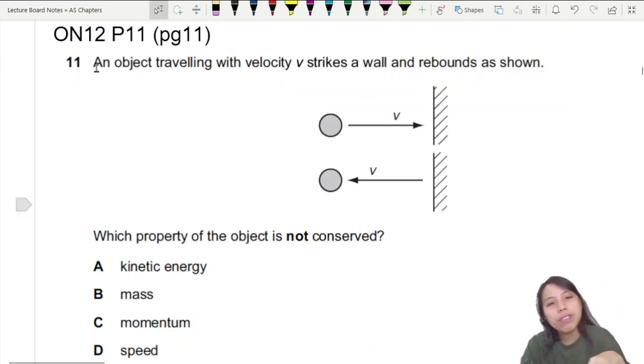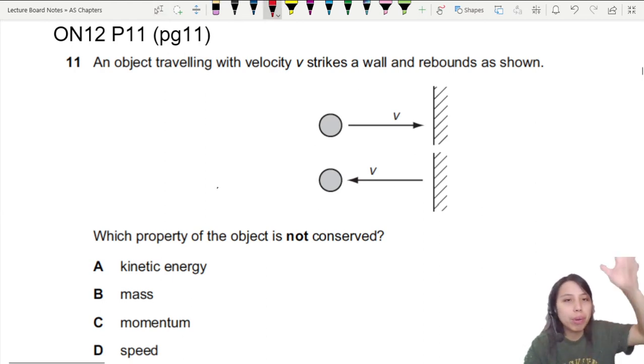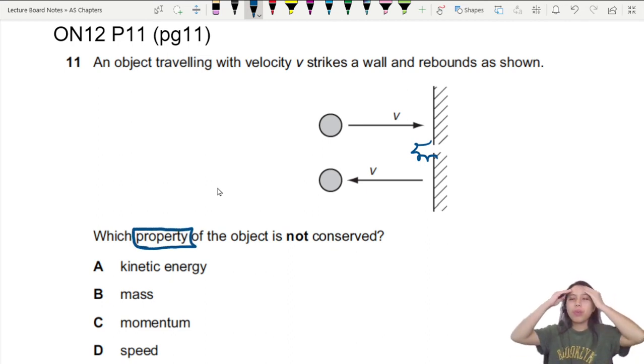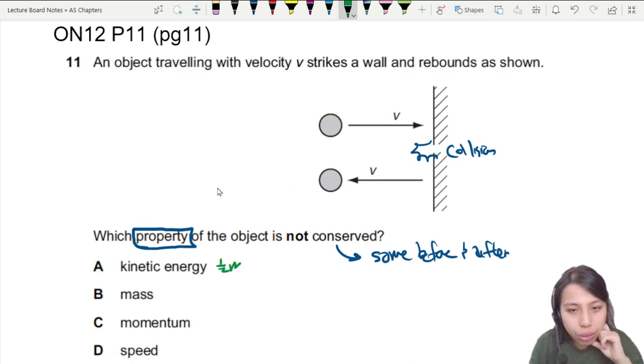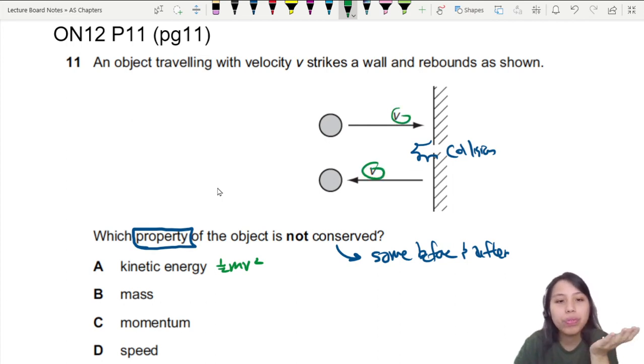How do we better understand this? Here we have an object travelling with a velocity v, hit the wall and bounce back. Which property of the object is not conserved? What does conserve mean? Conserve is a word you will see a lot. It kind of means like same before and after. Didn't change after something happened. Here the something happened is the collision. So what is not the same? Let's look carefully at the choices. First choice says kinetic energy. Kinetic energy we know as half mv squared. So you see the speed of the ball? V then after that collision also v. Then same, so same, no change. So it's conserved. We want the not conserved one, so this is not the answer.